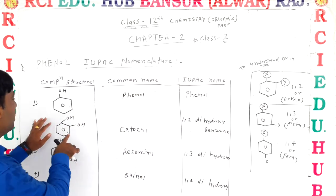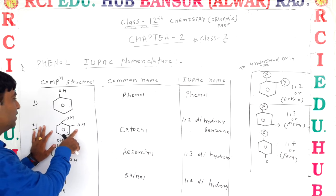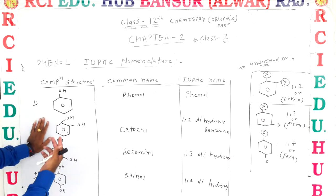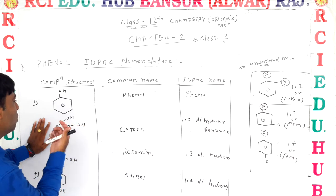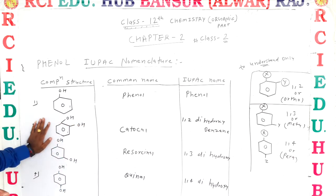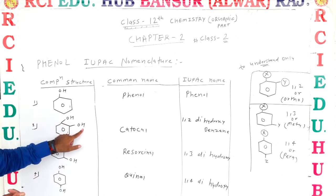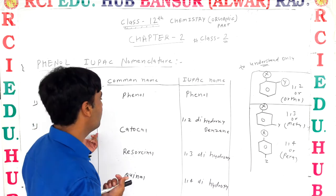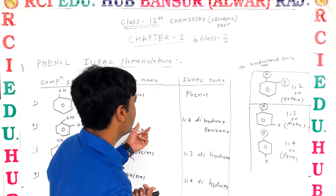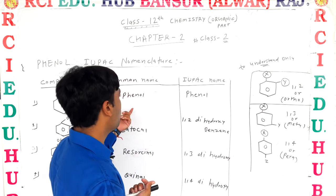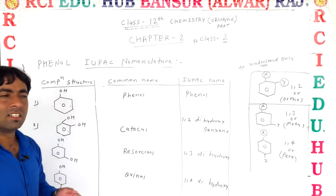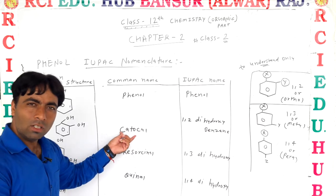But if we see this structure, you can see there are two substituents — and the two substituents are different. This condition means the IUPAC name and common name are different. The common name is catechol.